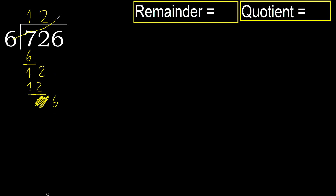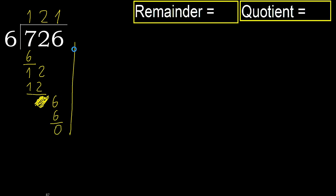6 multiplied by 2 is 12, which is greater. Multiply by 1 is 6, which is not greater. Subtract. Next, there is no more number, therefore finish it.